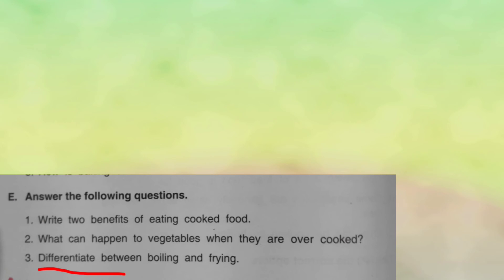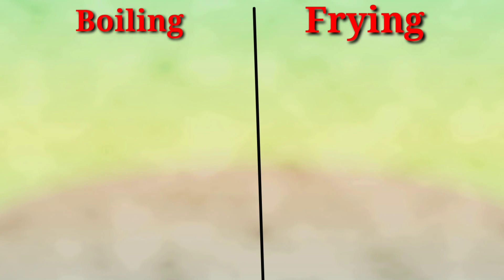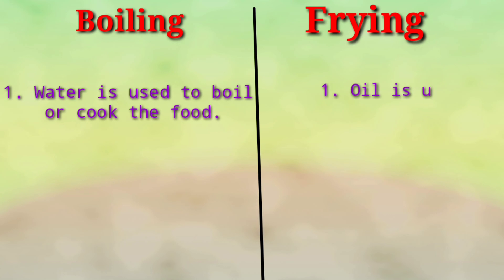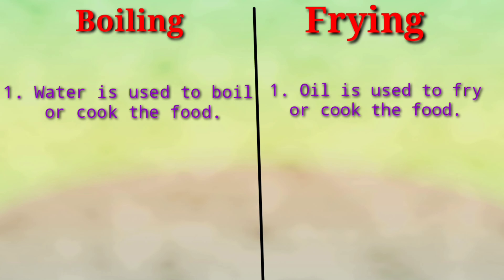Last question: differentiate between boiling and frying. We divide the page in two halves — one side for boiling and one side for frying. In boiling, water is used to boil the food. In frying, oil is used to fry the food.